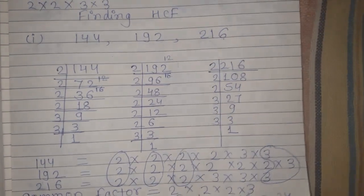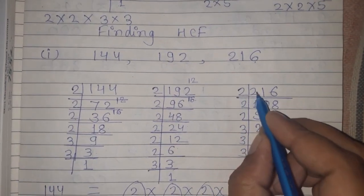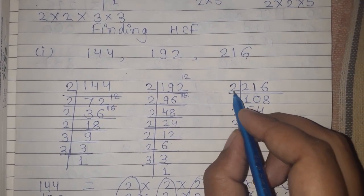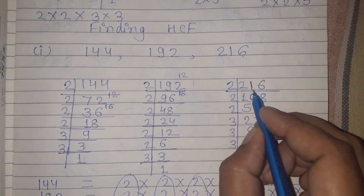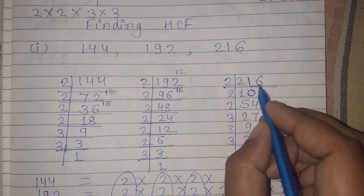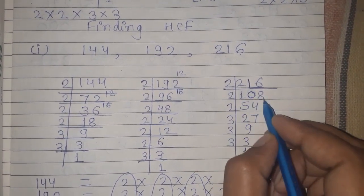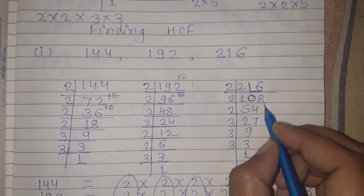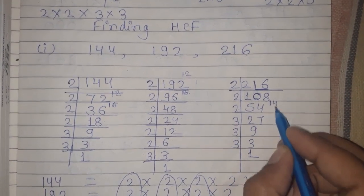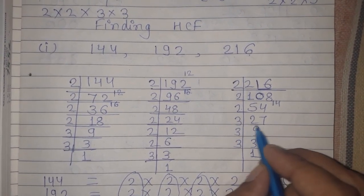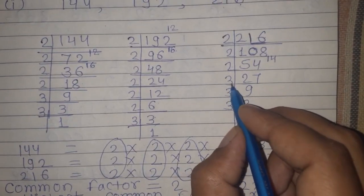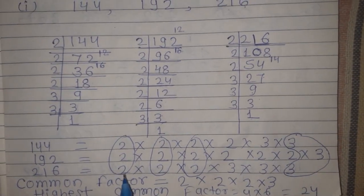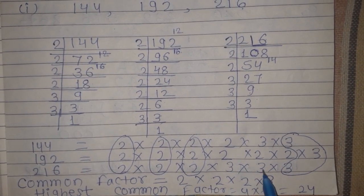Now the prime factorization of 216: 216 is not fully divisible by 2 in the last step, so we take the table of 3. Dividing: 3 × 27 = 81 — wait, 3 × 9 = 27, 3 × 3 = 9, 3 × 1 = 3. So the prime factorization of 216 is 2 × 2 × 2 × 3 × 3 × 3.